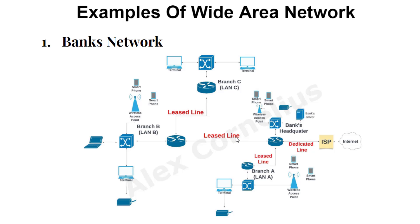A leased line is a kind of borrowed connection. For instance, this bank may not have the money to buy the hardware needed to extend this service from branch A to branch B, so they can run a leased line from another ISP, paying them monthly or yearly depending on the agreement. Then another branch — this bank may have another branch residing at another location, maybe in another state or country. They can still use this line to extend the service to that branch, or they can run their own infrastructure if they have the resources. A leased line is also used to extend the service to branch C.